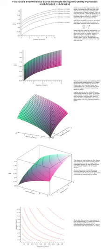Utility is a device to represent preferences rather than something from which preferences come. The main use of indifference curves is in the representation of potentially observable demand patterns for individual consumers over commodity bundles. There are infinitely many indifference curves; one passes through each combination. A collection of indifference curves, illustrated graphically, is referred to as an indifference map.